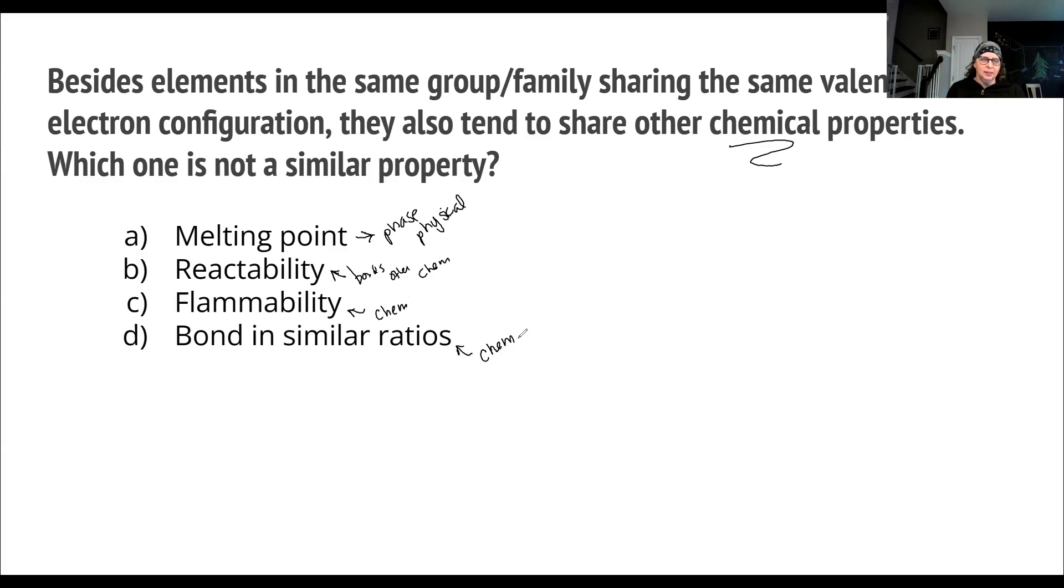For the answer to the question, which one is not a similar property, we're able to go, okay, that one's quick, melting point right there. That's based on other items. Let's think about these other ones though. Bonding in similar ratios, is that really true? Well, let's think about it. If we have the same number of valence electrons, if I have two plus two for my charge because I have two valence electrons, and then I'm going to bond with somebody that has seven valence electrons and a minus one charge, what am I going to see right there?